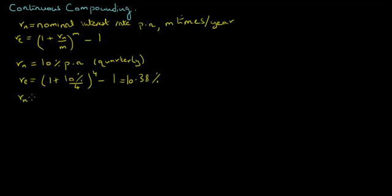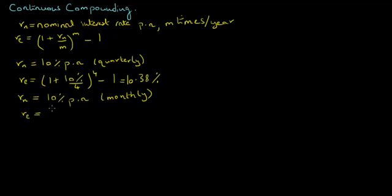On the other hand, if the nominal interest rate Rn equals 10% per annum with monthly compounding, then the effective annual interest rate equals 1 plus 10% divided by 12, all this to the power of 12, minus 1, and this equals 10.47%.